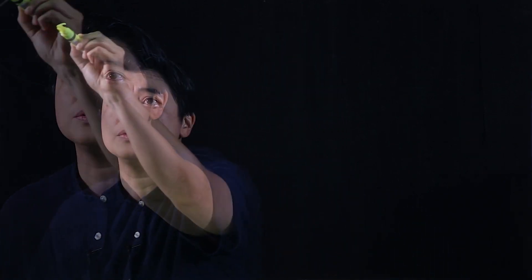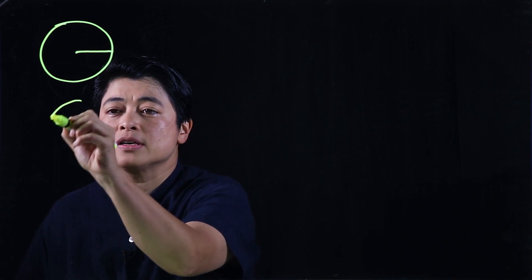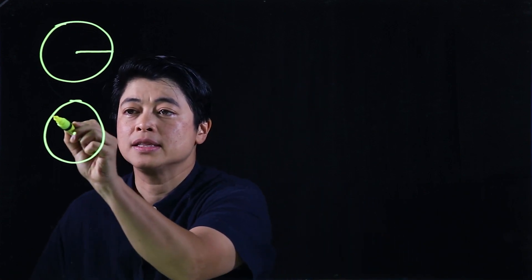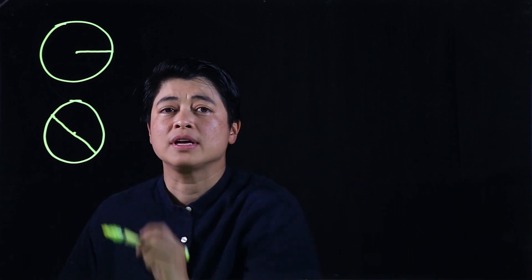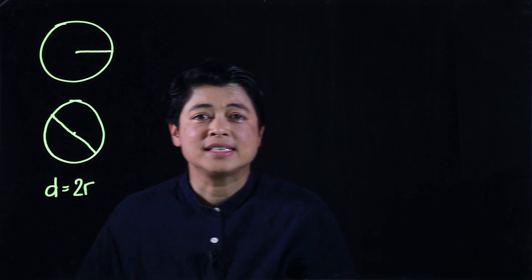Every circle has a center, and from the center to any point on the circle, that's called a radius. A circle also has a diameter. The diameter is a line connecting any two points of the circle, but it has to pass through the center. So if we compare radius to diameter, that means the diameter is equal to twice the radius.